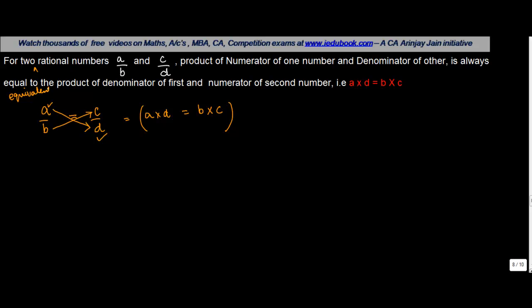For a upon b and c upon d, product of numerator of one number and denominator of other is always equal to the product of denominator of first, which is b, and the numerator of second.